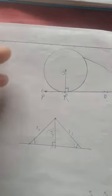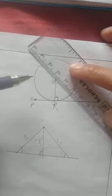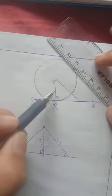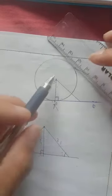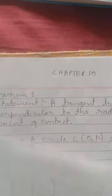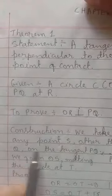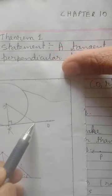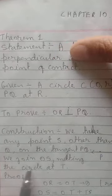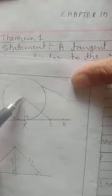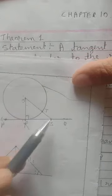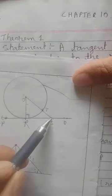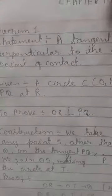To show OR makes an angle of 90 degrees, we need to prove it is the shortest line from O to the tangent PQ. For the construction, we take any point S other than R on the tangent PQ and join OS. This line OS cuts the circle at a point T and meets the tangent at S. Now we compare OR and OS.